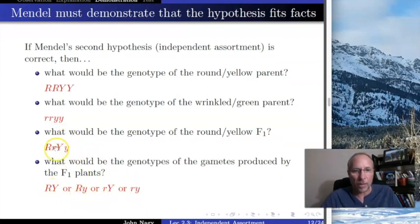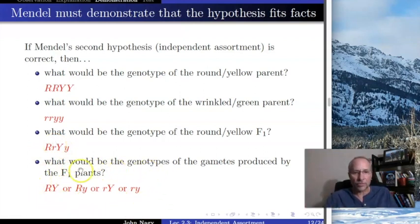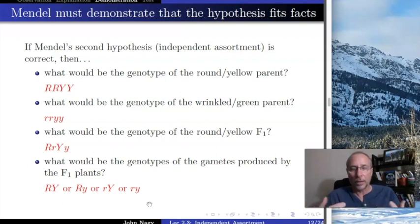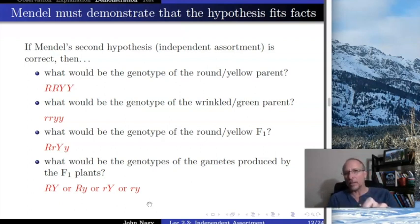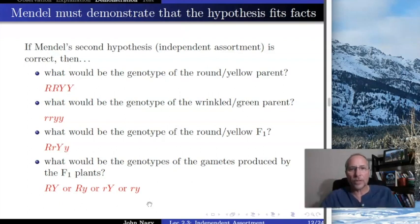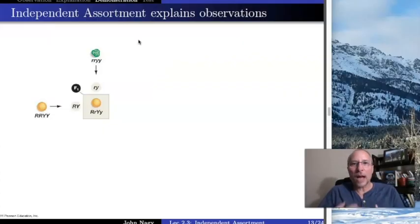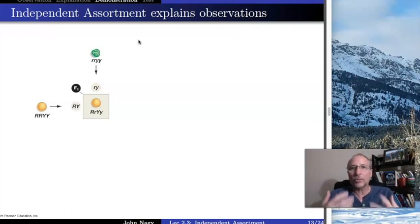So following the simple rule that it can only give one R and one Y to its offspring, it can give any of these four gametes — and it gives equal numbers of each. That's part of the independence idea: the R and Y are put together independently of each other. If I put a big R into the gamete, that doesn't change the probability of putting a big or little Y into the gamete. So when the R's and Y's are independent, we get equal numbers of all four gamete types.